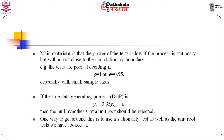One way to get around this is to use a stationarity test as well as the unit root test. We look at H0: y_t is stationary versus H1: y_t is non-stationary, so that by default under the null the data will appear stationary. Another test available in the literature is the KPSS test, which is very useful. One can apply the KPSS test for checking stationarity of the data as well.